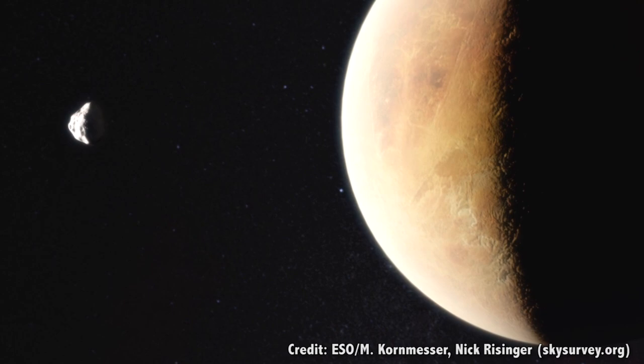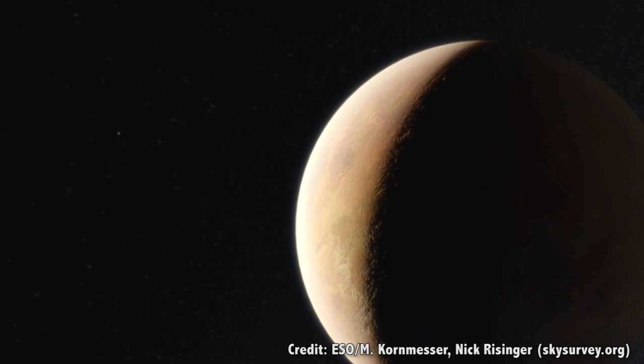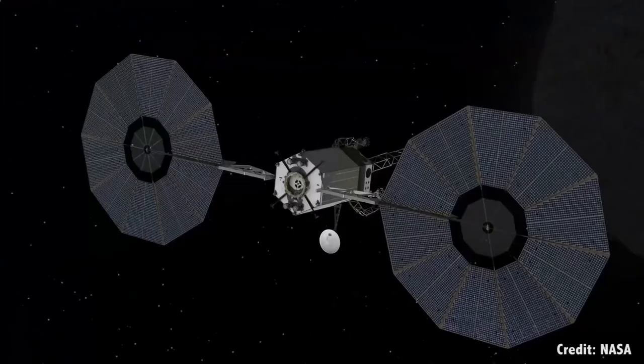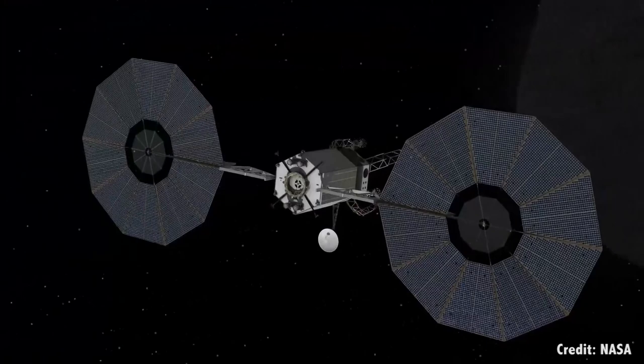We can also take advantage of momentum transfers from gravity to alter the course of an object by making a close flyby. You can use this gravitational slingshot to use the gravity of a planet to change large objects into a new trajectory.